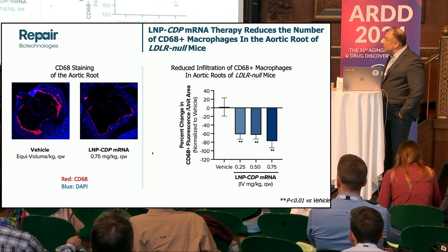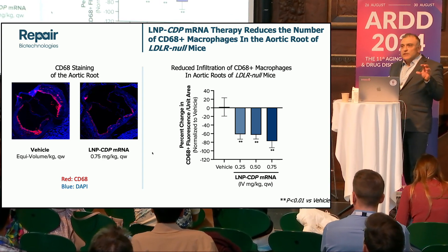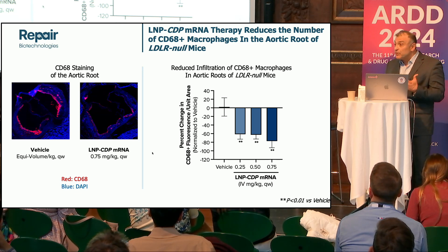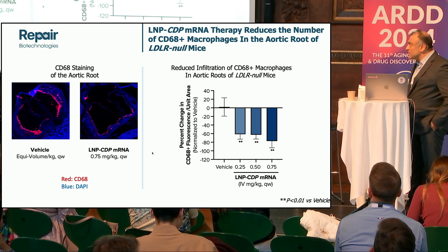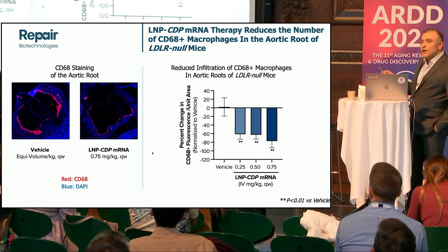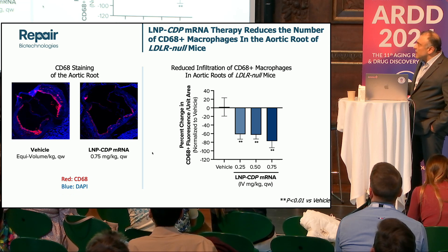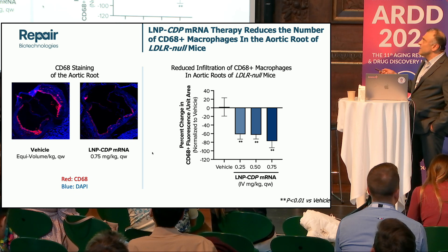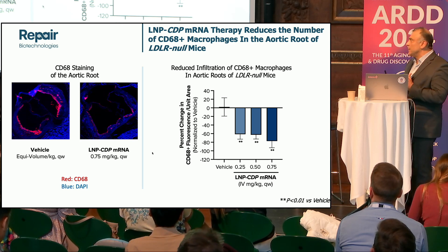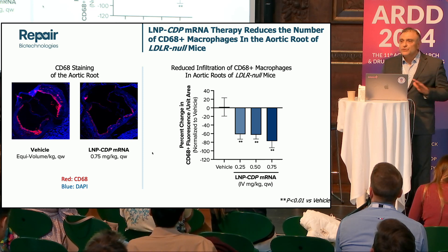Switching gears to the immune system: infiltration of immune cells, particularly monocytes, into the plaque accelerates plaque progression. Monocytosis — an upregulation of monocytes in circulation — is correlated with more aggressive atherosclerotic plaque progression. Here we see the opposite: when we treat our mice with our drug, there is a reduction in the number of CD68-positive macrophages — CD68 being a pan-macrophage marker. Also, when we look at the population of cells in the spleen, the subpopulation of immune cells points to a more anti-inflammatory population. Therefore, there is also a reprogramming of the immune system, the mechanism of which we do not know at this time.